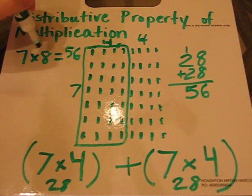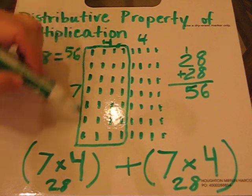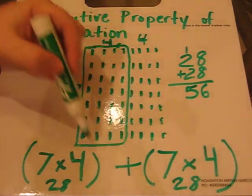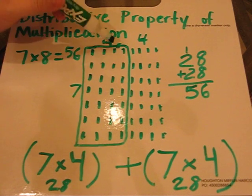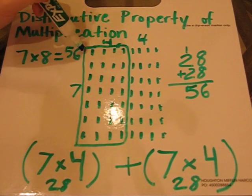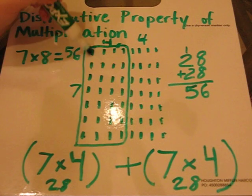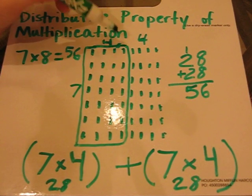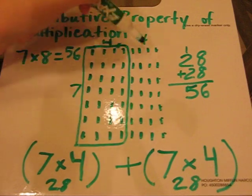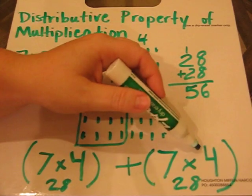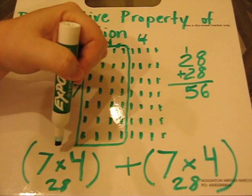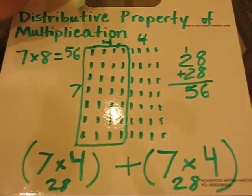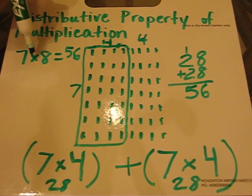So just to review, the 7 times 8 I got from 7 going down and 8 going across. But I didn't want to count all of these, so I cut it in half and said, okay, well this side has 7 times 4, 7 going down, 4 at the top. And this side has 7 going down and 4 at the top. So that's how I got my two multiplication problems. Then I add those two answers together to find the same product as 7 times 8.